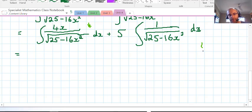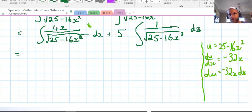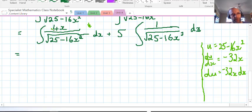So what I've done on the second term is take the 5 out the front, and in a moment we'll see why that is. We're going to integrate this first term. We're going to let u equal 25 minus 16x squared.